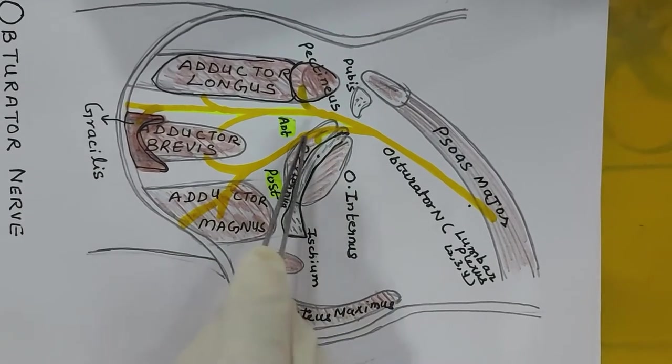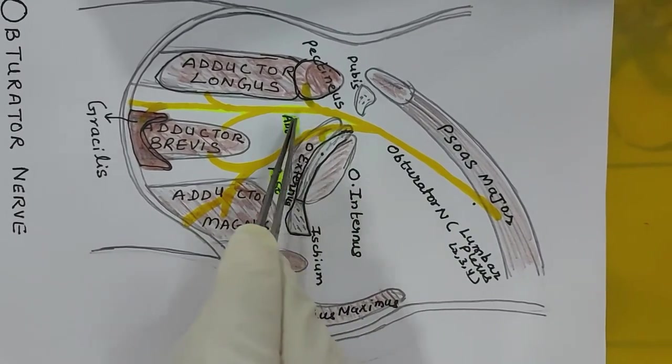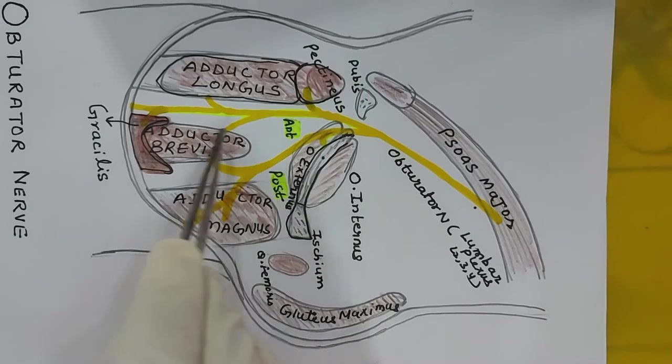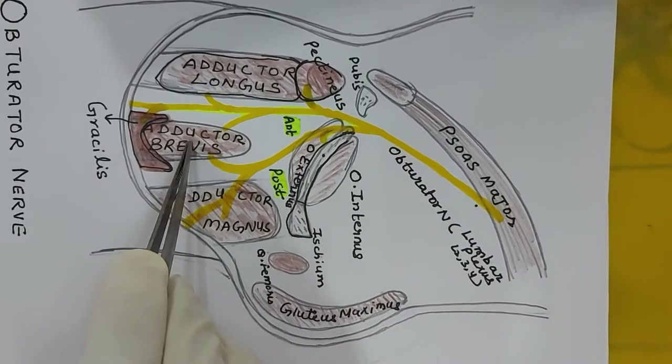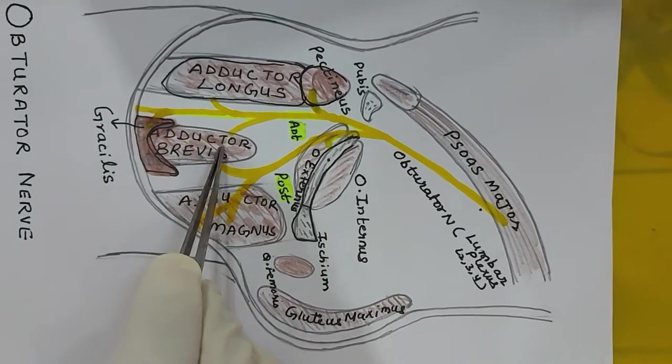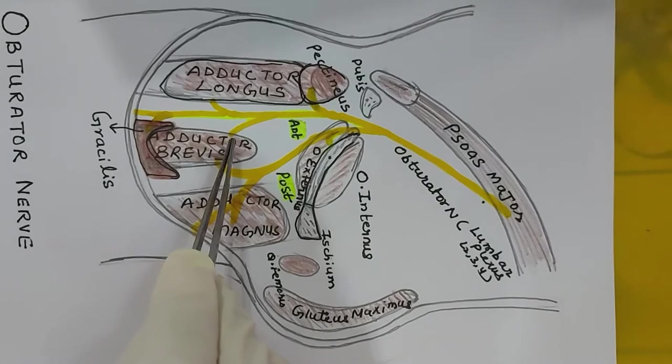This diagram shows the course of the obturator nerve around the adductor brevis muscle. We can also see this relation in the dissected specimen.